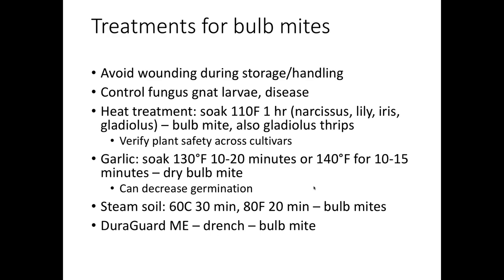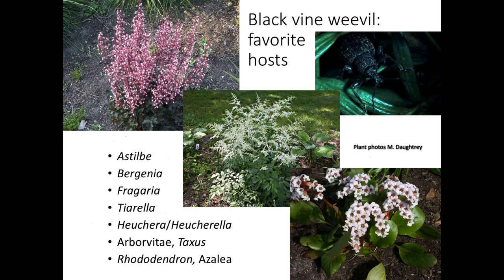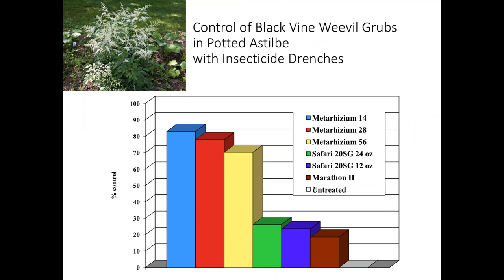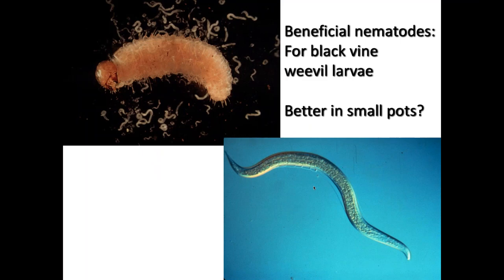A little bit on black vine weevil — a problem we haven't seen much of lately, but we used to have issues particularly on perennials. We used a product called Met52, a Metarhizium fungus, which is really effective. The granule product mixed in with the media gave very high levels of mortality, with somewhat less control from conventional treatments. We also did a drench looking at three rates of Met52 compared to Safari and Marathon, with very high levels of control. This is a very effective biocontrol for black vine weevil. Beneficial nematodes can be used as well, with mixed results.